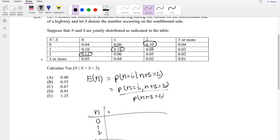So now we're looking for the numerators first. What's the probability that n is equal to 0 and n plus s is equal to 2? Well, that's just right here, 0.1. This one's going to be the numerator first. That's 0.1.